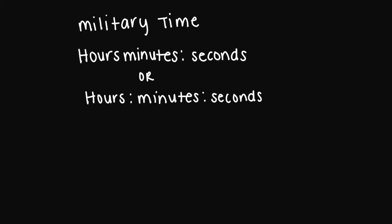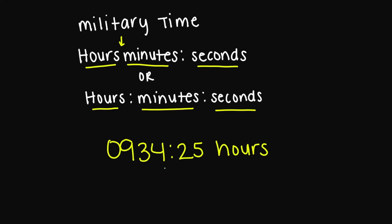Now let's look at military time. To write military time, you have your hours followed by the minutes and then the seconds. Notice here that I do not have a colon in between my hours and my minutes when it comes to military time. So let's look at this example here. We have 0934 hours. So we have our hours, which is 09, 34 is going to be the minutes, and then 25 is the seconds.